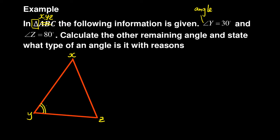So when you're given that, angle Y - you go to angle Y and put the angle, which is 30 degrees. As well as angle Z, which is 80 degrees. Then it says calculate the other remaining angle and state its type. You can see in this case they want you to find...